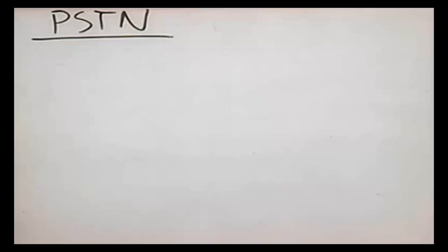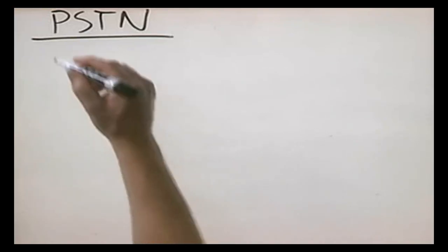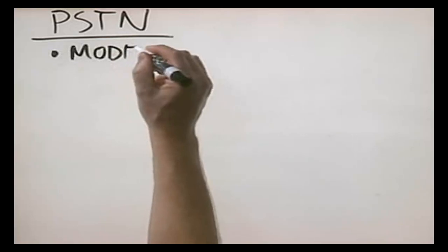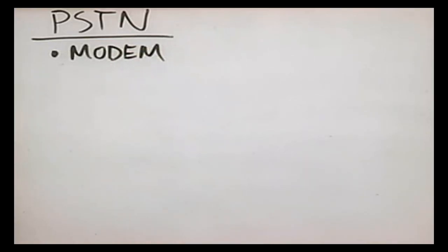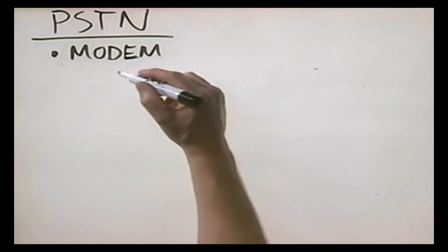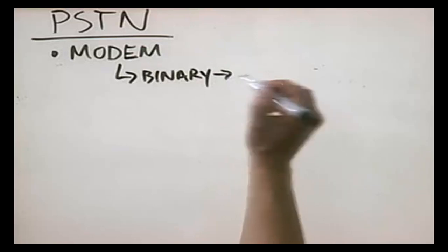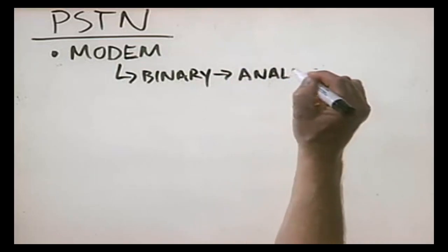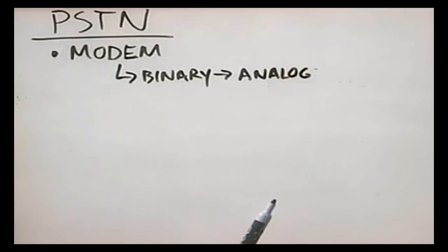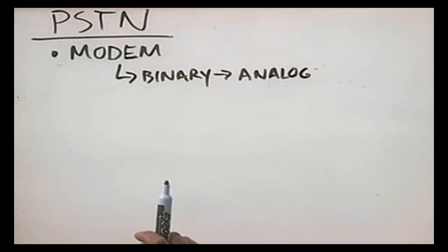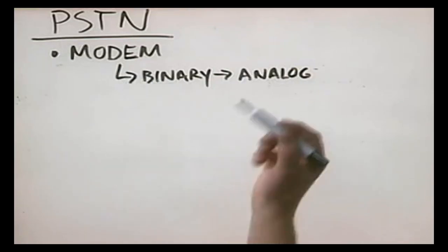The first connectivity method we're going to talk about is PSTN, or the Public Switched Telephone Network. PSTN sounds really complex, but what we're really talking about here is a modem. You've probably done this at some point, where you connect to the internet by dialing up through a modem installed in your computer. With a modem, we take a binary PC signal and we convert it into an analog signal that can be transmitted through the telephone network. As far as the telephone network is concerned, that signal is a phone call — it doesn't know that it's actually a modem communicating binary data.